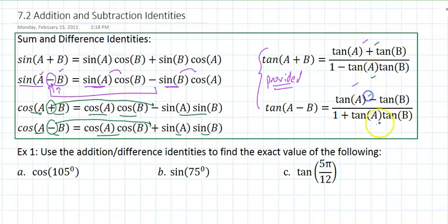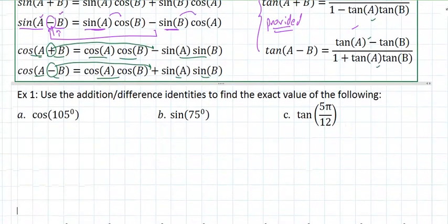Tangent, those are provided. You just have to use them properly. So if I look at the first example, use addition or difference identities to find the exact value of the following. I need to know the cosine of 105 degrees. Exact means no calculator.